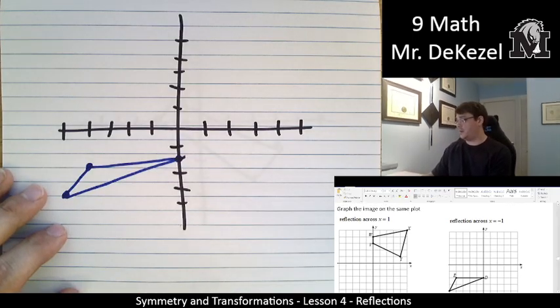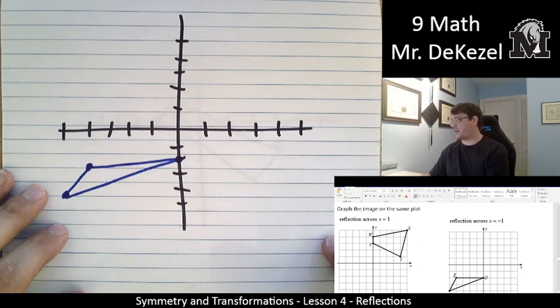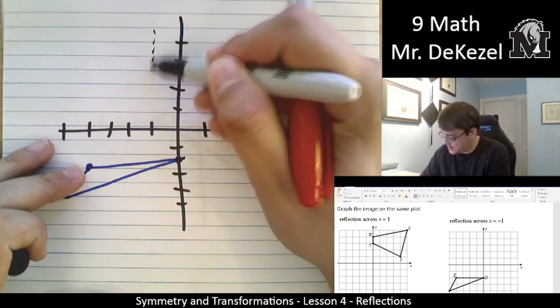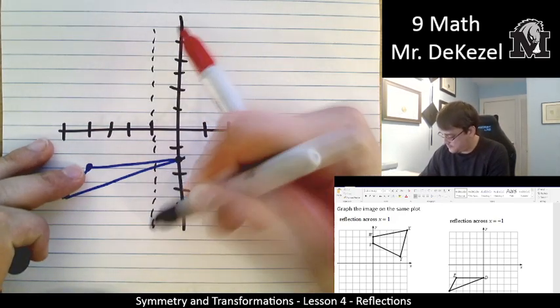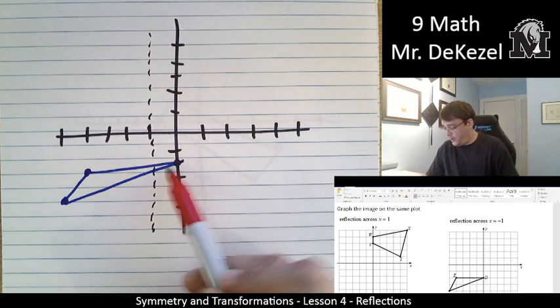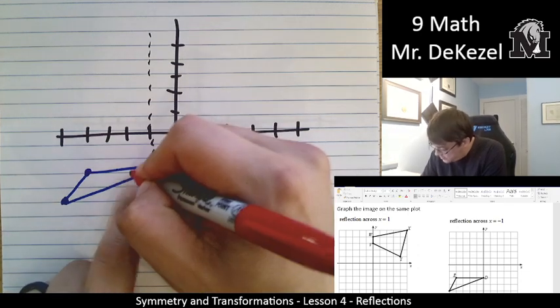This one is a triangle, there's only three points. The reflection is across negative 1, x equals negative 1. So I'm going to put my dotted line here. This point is one value to the right of it, so it's now going to become one value to the left.